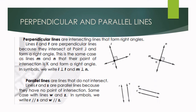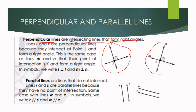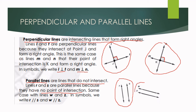Let us define perpendicular lines and parallel lines. When we say perpendicular lines, these are intersecting lines that form a right angle. For example, line L is perpendicular to line T, and line M is perpendicular to line N — these two intersecting lines form a right angle. In symbol, that is L perpendicular to T, and M perpendicular to N. When we say parallel lines, these are lines that do not intersect — they have no point of intersection. For example, line R is parallel to line S, and line W is parallel to line Z. In symbol, R is parallel to S, and W is parallel to Z. That is the difference between perpendicular and parallel lines.